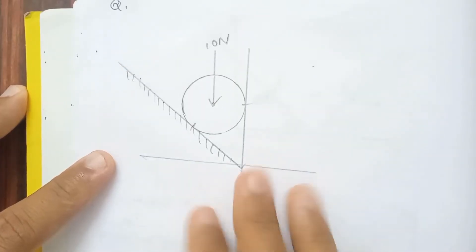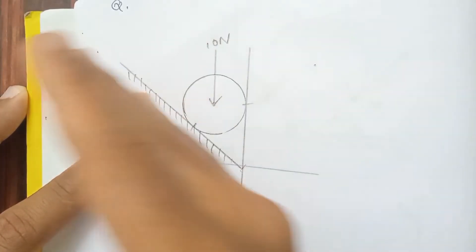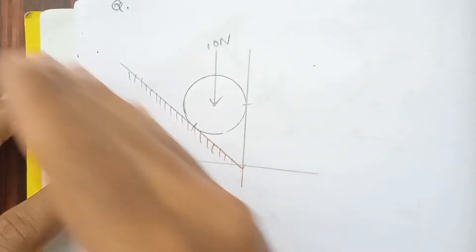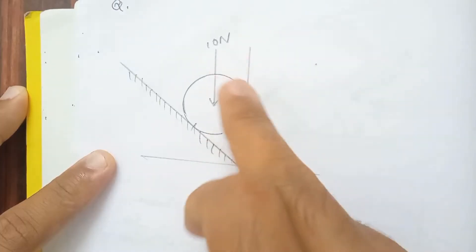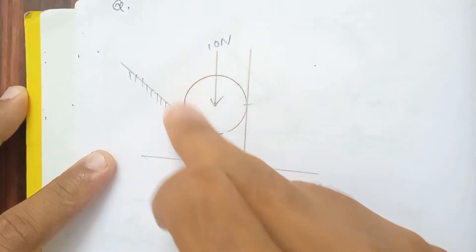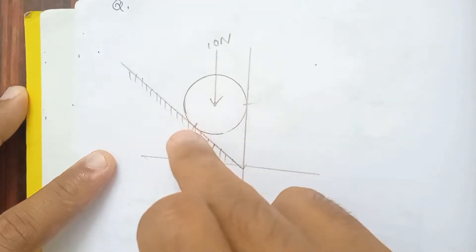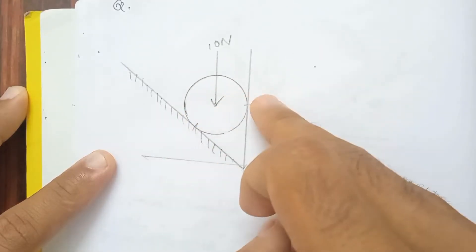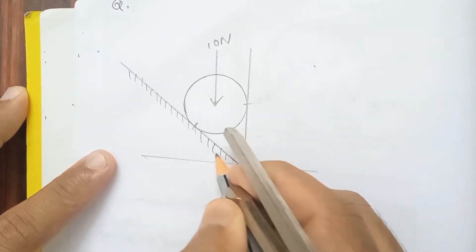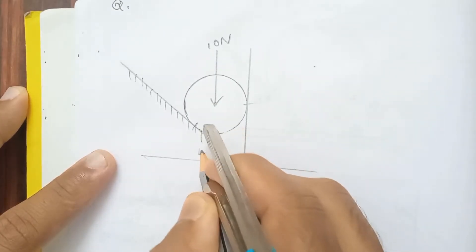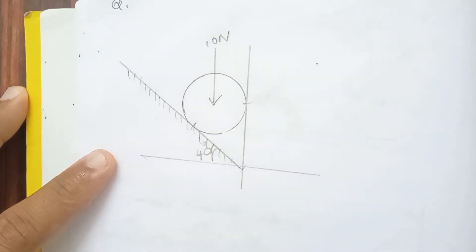In this figure, this is a groove. This is a vertical wall. This is a support side. This is a ball. This angle is 40 degrees.